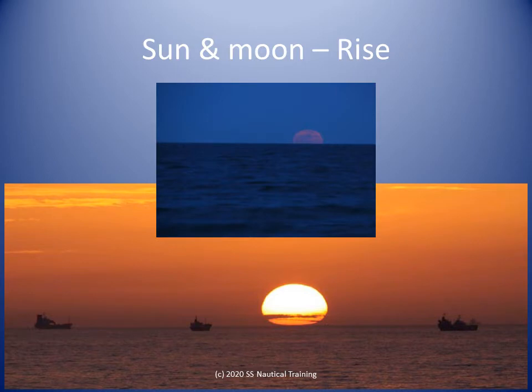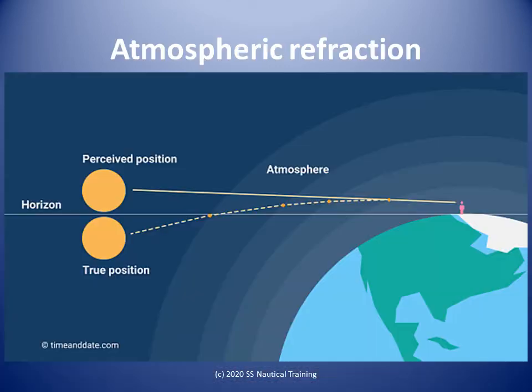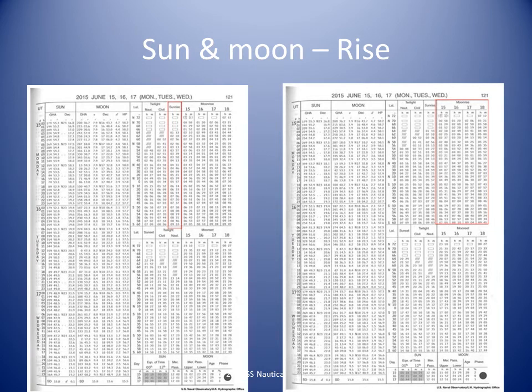Taking bearings of the Sun at sunrise and sunset, then comparing with the calculated amplitude of the Sun at the time of the bearing, is an easy way to fulfill the requirement to check compass error at least once per watch. Remember that astronomical refraction causes objects to appear higher above the horizon than they actually are. An amplitude is taken when the Sun is half a diameter above the horizon. The Nautical Almanac provides the same sunrise time for different latitudes for three days; the sunrise column is highlighted in red on the left panel.